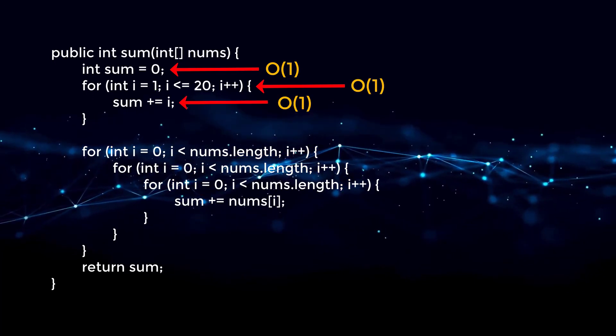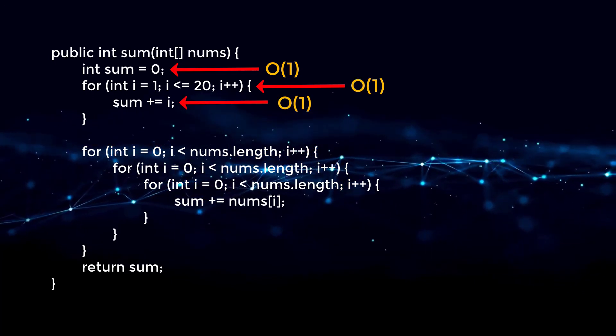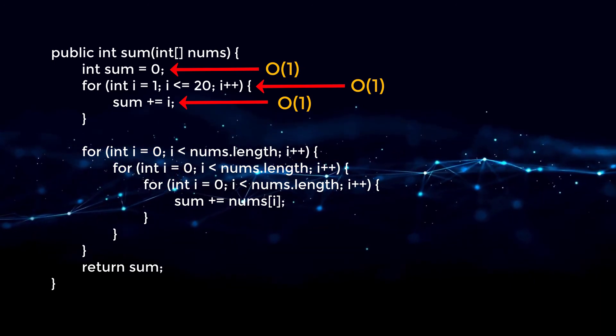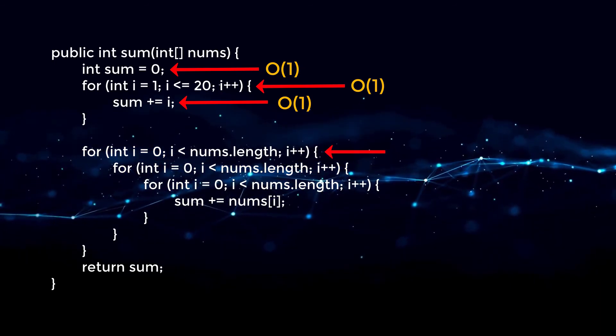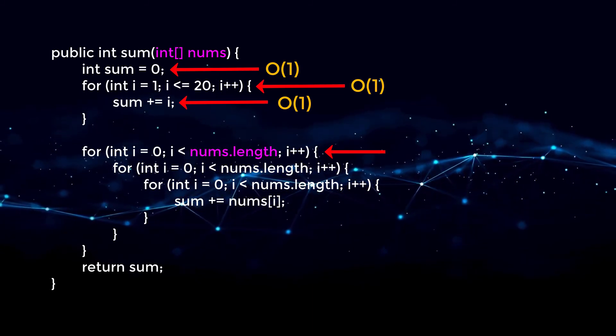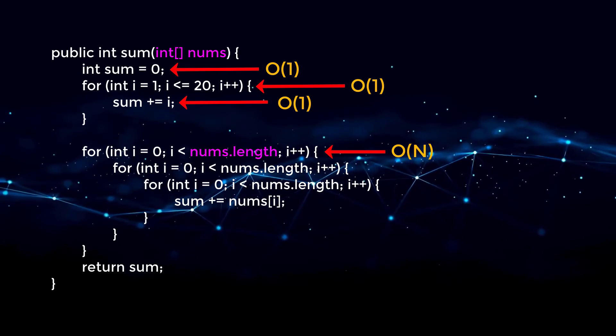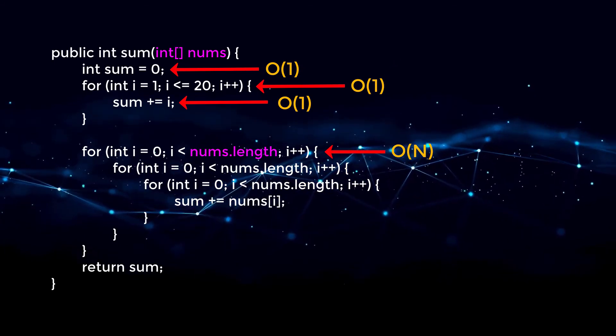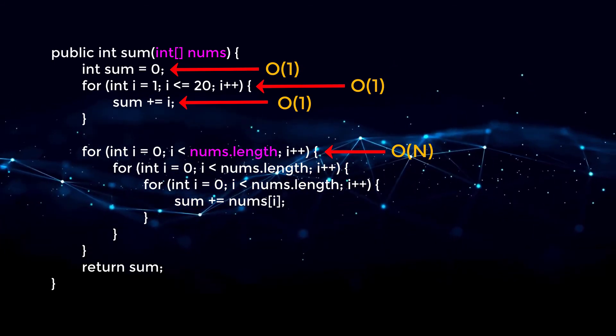Line three is also going to be constant. We are not affected by our input here. Then when we go to the start of the next for loop, we can see that we are running up to nums.length. This will take Big O of n time where n is the number of elements that we have in our array.